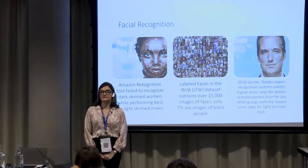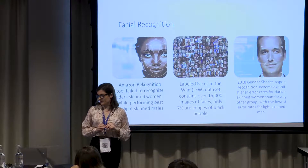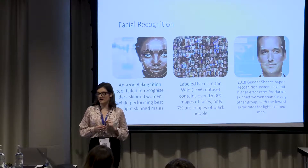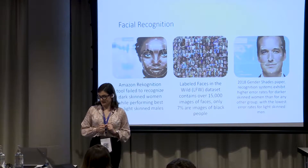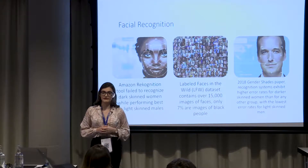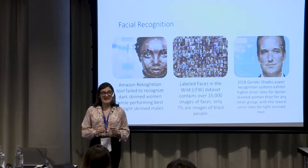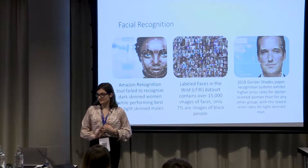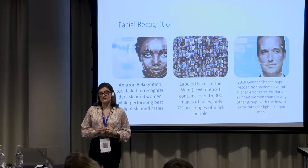In facial recognition, bias has also been uncovered. The 2018 Gender Shades paper examined three commercial facial recognition systems that categorized faces by gender. All three systems had higher error rates for darker-skinned women than for any other group, and the lowest error rates for light-skinned males. When examining the roots of this, we are led to the training datasets, which are composed of dominantly male and white faces. The Labeled Faces in the Wild dataset contains over 15,000 face images, but only 7% are images of black people.